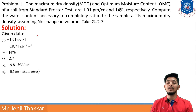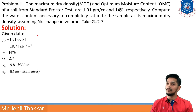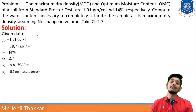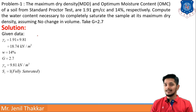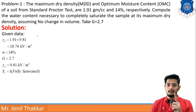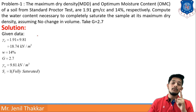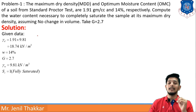Writing the given data: γd (dry unit weight) = 1.91 × 9.81 = 18.74 kN/m³. Water content w = 14%, G = 2.7, γw = 9.81 kN/m³, and Sr should be 1 for a fully saturated sample.